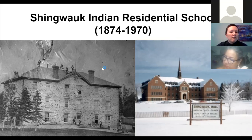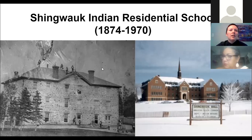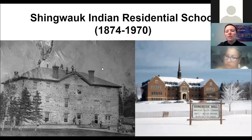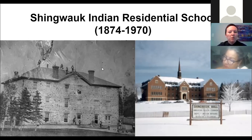In 1970 it closed and Algoma University College moved into the building. When Algoma moved into this building, it came with a lot of questions. In the 1970s, if you had talked to a faculty member or other people who worked at the university and said, this is a really old building — what was it before Algoma came here? No one would have said it was a residential school. Part of it was that the history of residential schools wasn't as widely talked about in the 1970s, but there was also some institutional forgetting going on — they just didn't want to talk about this history.